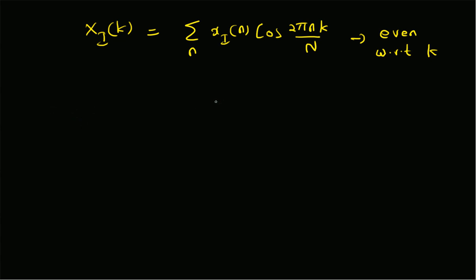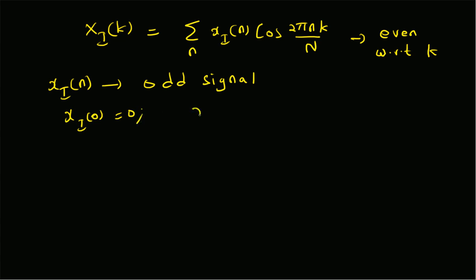Now, what happens to the DFT when x_i of n is an odd function — that is, when the imaginary sequence is purely odd? That basically means x_i of 0 equals 0, and by definition for an odd signal, x_i of minus n equals minus x_i of n. For N-point sequences, the odd signal condition means x_i of N minus n equals minus x_i of n.